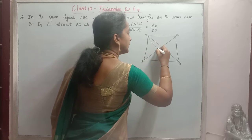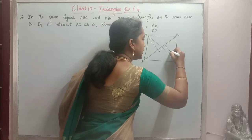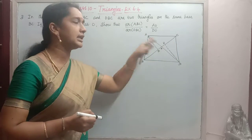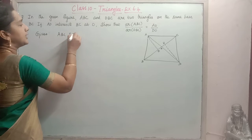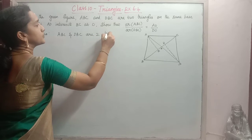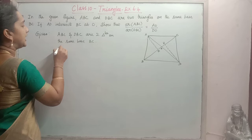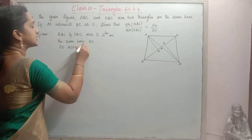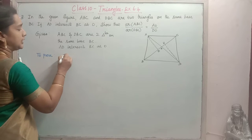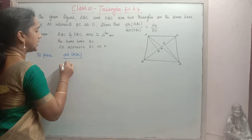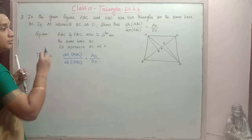For proving this, we will construct a perpendicular AM to BC and a perpendicular DN to BC. So given: ABC and DBC are two triangles on the same base BC, and AD intersects BC at O. To prove: area of triangle ABC by area of triangle DBC is equal to AO by DO.